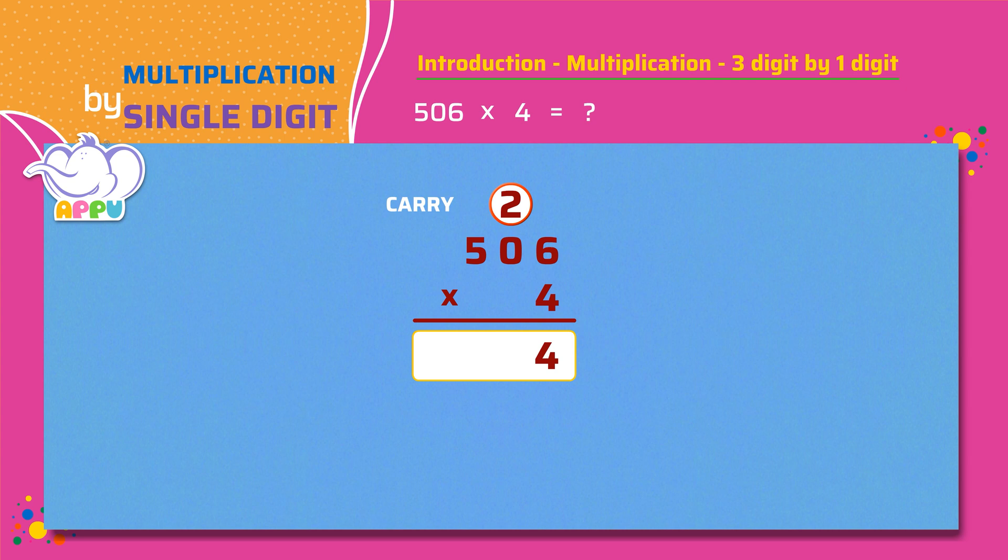Next we multiply the number in the tens place by 4 which is 0 times 4 equals 0. Then add the carry to get 0 plus 2 equals 2. Lastly we multiply the number in the hundreds place by 4 which is 5 times 4 equals 20. So the answer is 2024.